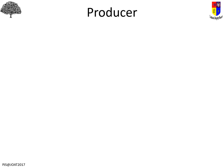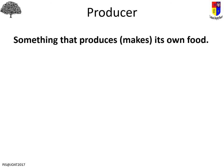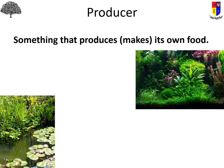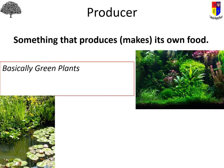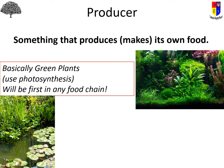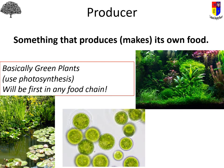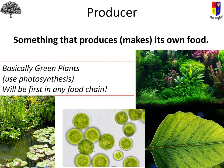A producer is something that can produce — make — its own food. Really what we're talking about here is green plants. Anything green has the ability to take inorganic raw materials — carbon dioxide, water, and light energy collected by chlorophyll — and produce sugars. Every single food chain, any part of an ecosystem where you're looking at where food comes from, has to start with a producer. For your purposes, that's green plants, ranging from tiny algae all the way up to something large with big leaves.